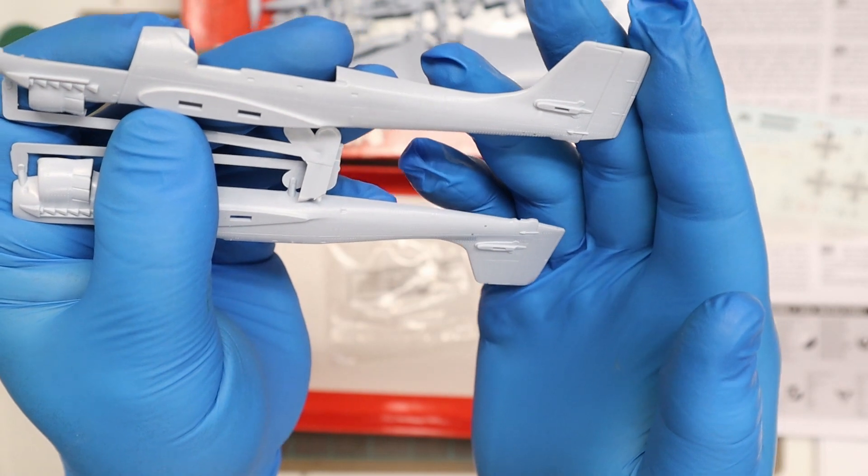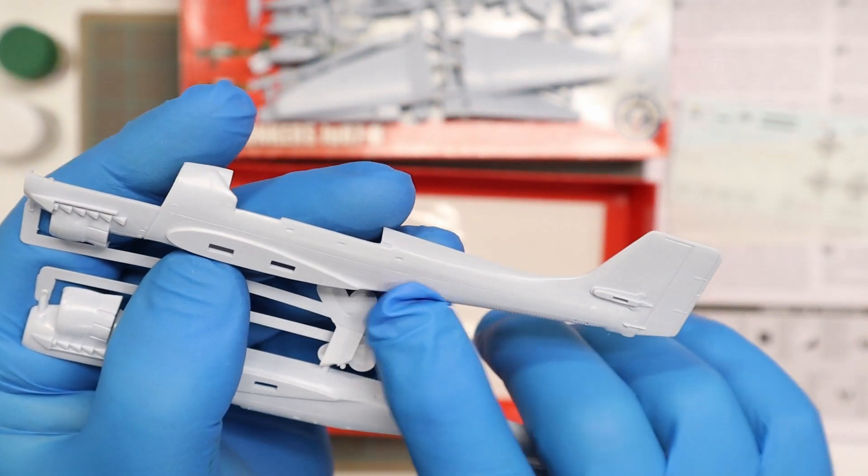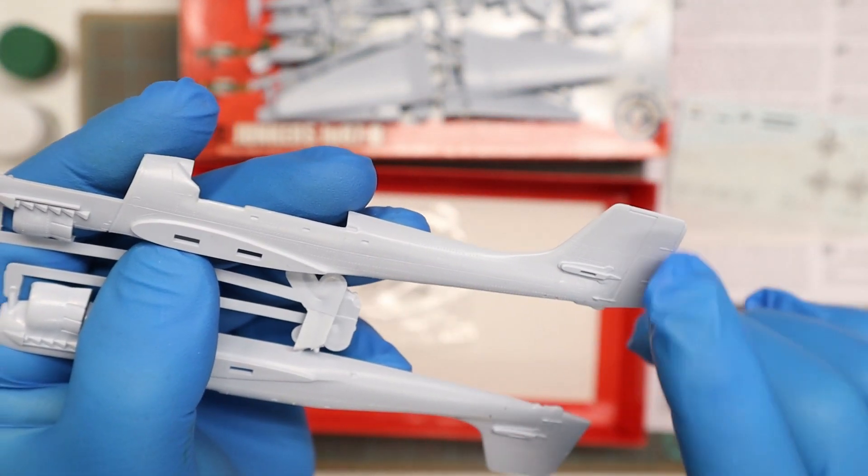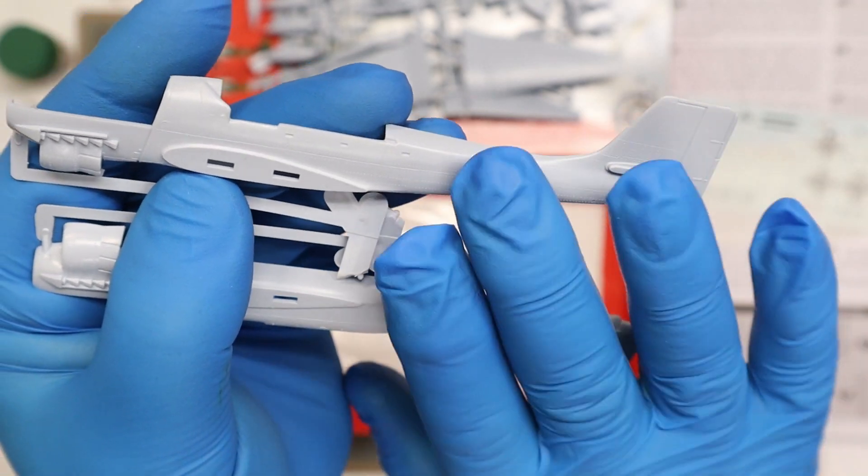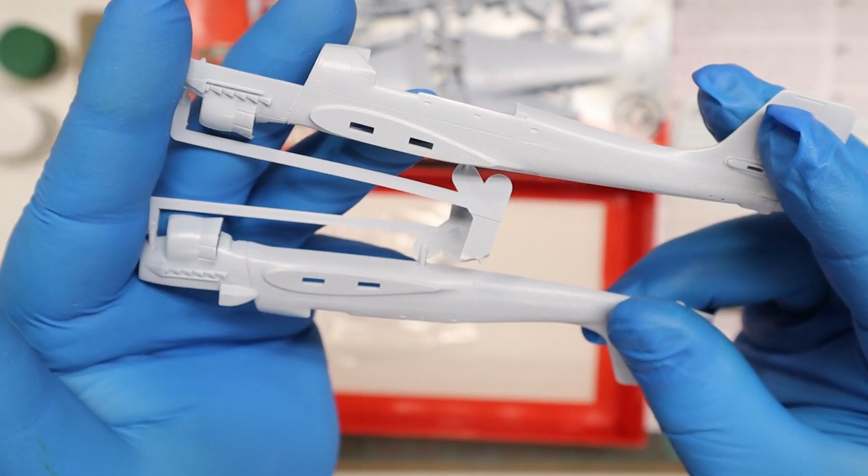And again, looking at the exterior of the fuselage, it's got great detail. Again, panel lines, lots of rivets, and again raised as the rest of the model.